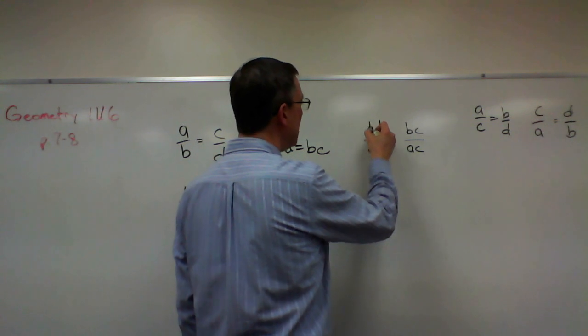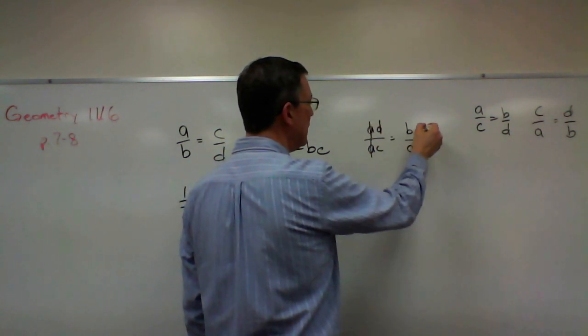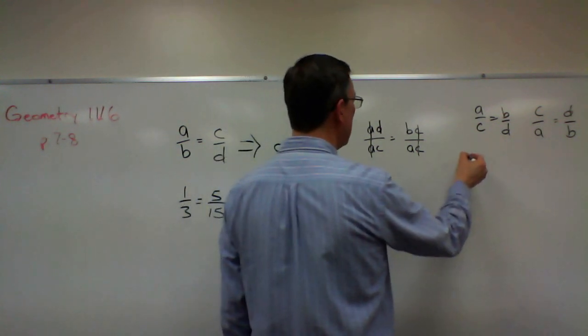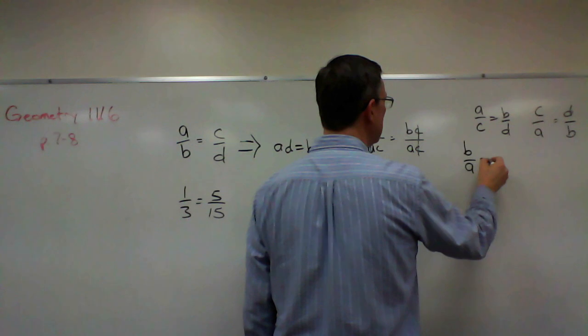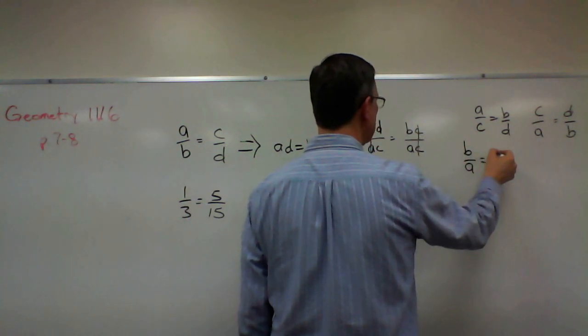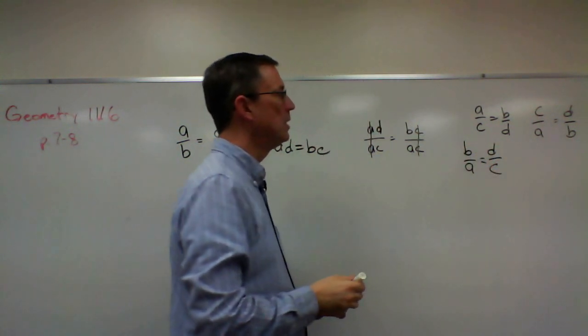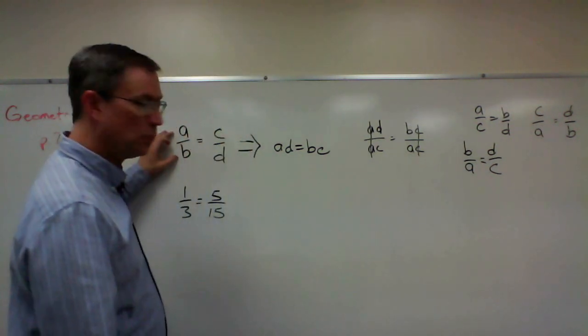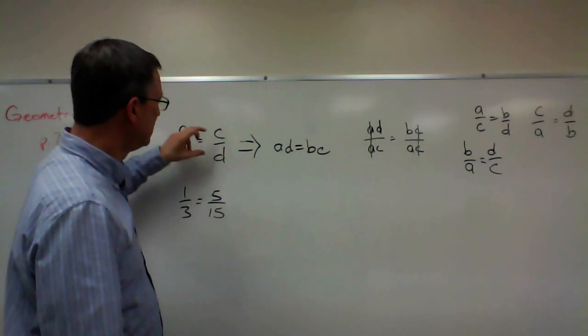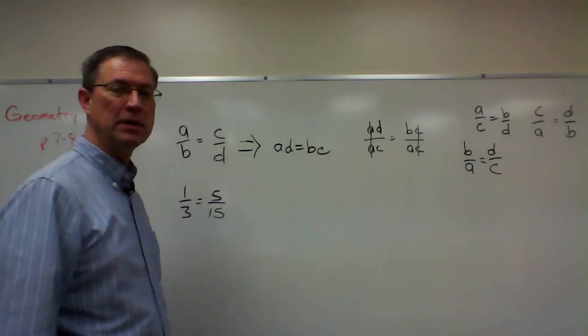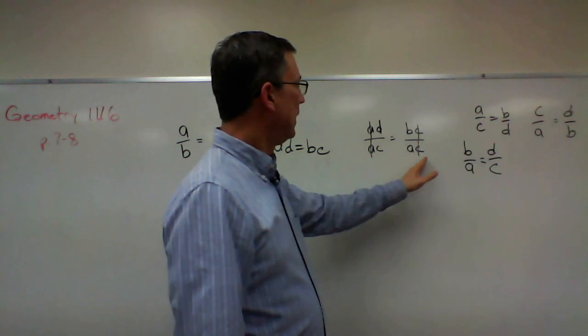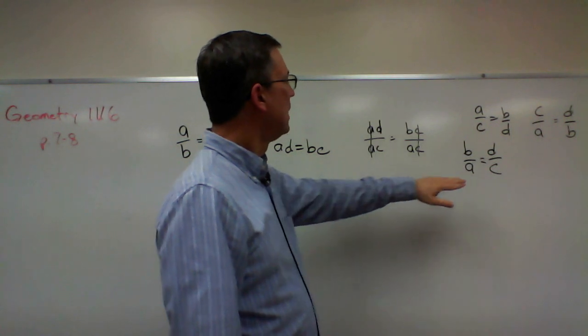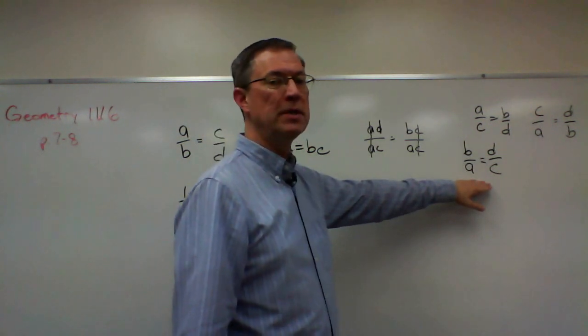Now watch what happens here. A cancels out here, and C cancels out here. And so I'm left with B is to A as D is to C. So I've taken this one and flipped it upside down. I've gone ahead and done the division property and come up with this restatement with the same terms.